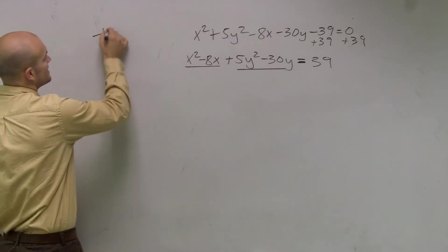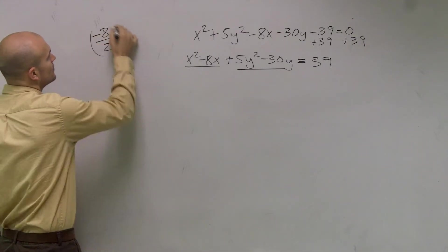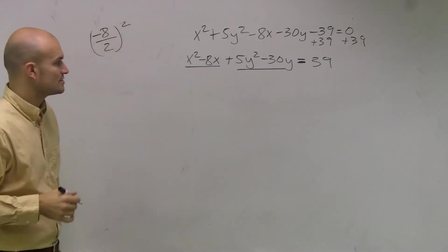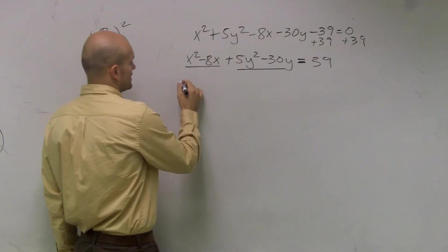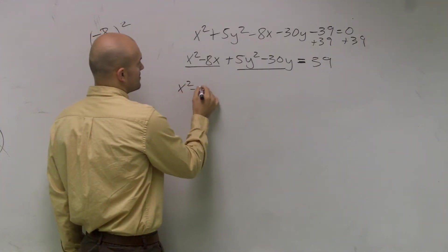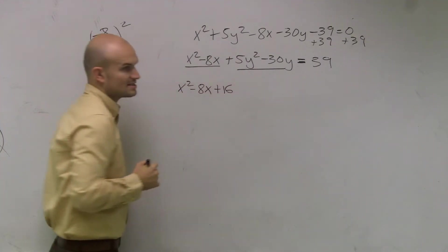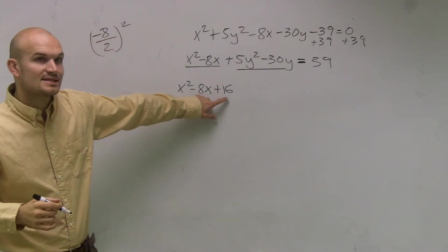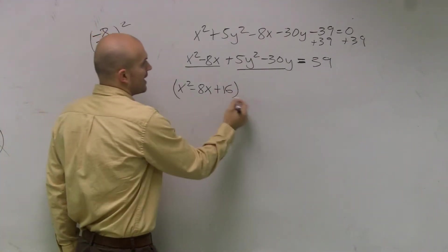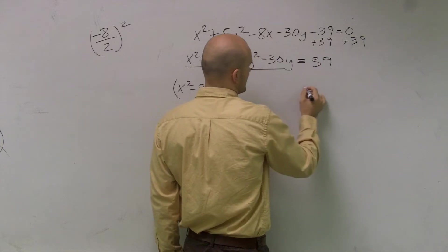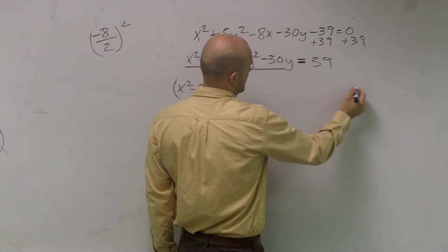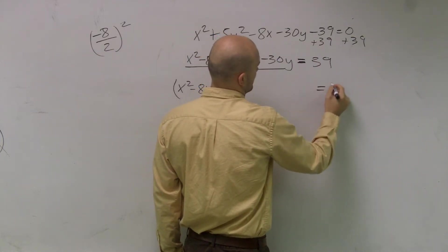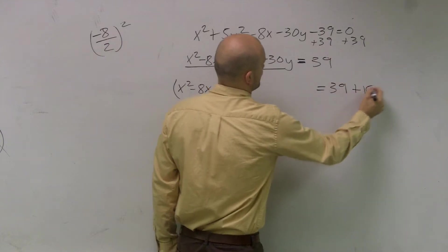Well, for the x term, I'm going to take negative 8, divide it by 2, and square it, which is going to give me a positive 16. So therefore, I'll have x squared minus 8x plus 16. Now, remember, since I'm adding 16 on this side, I have to make sure I add 16 over here, plus 16.